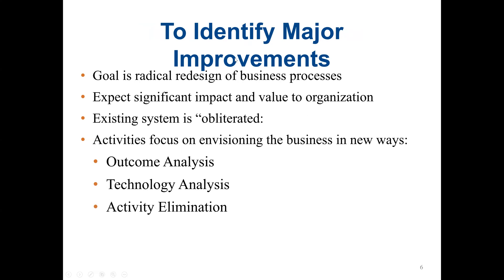Next is identifying major improvements. The goal here is a radical redesign of business processes, and we should expect significant impact and value to an organization. The existing system activities focus on a vision of the business in new ways. Here we have three methods: outcome analysis, technology analysis, and activity elimination.